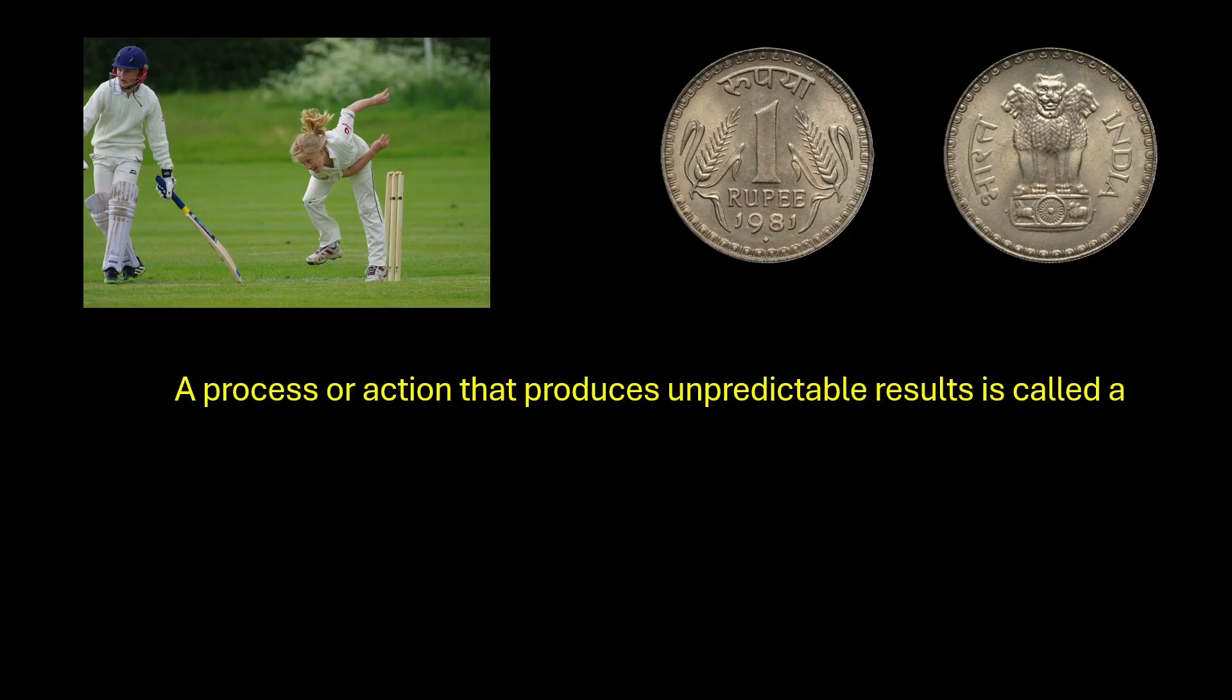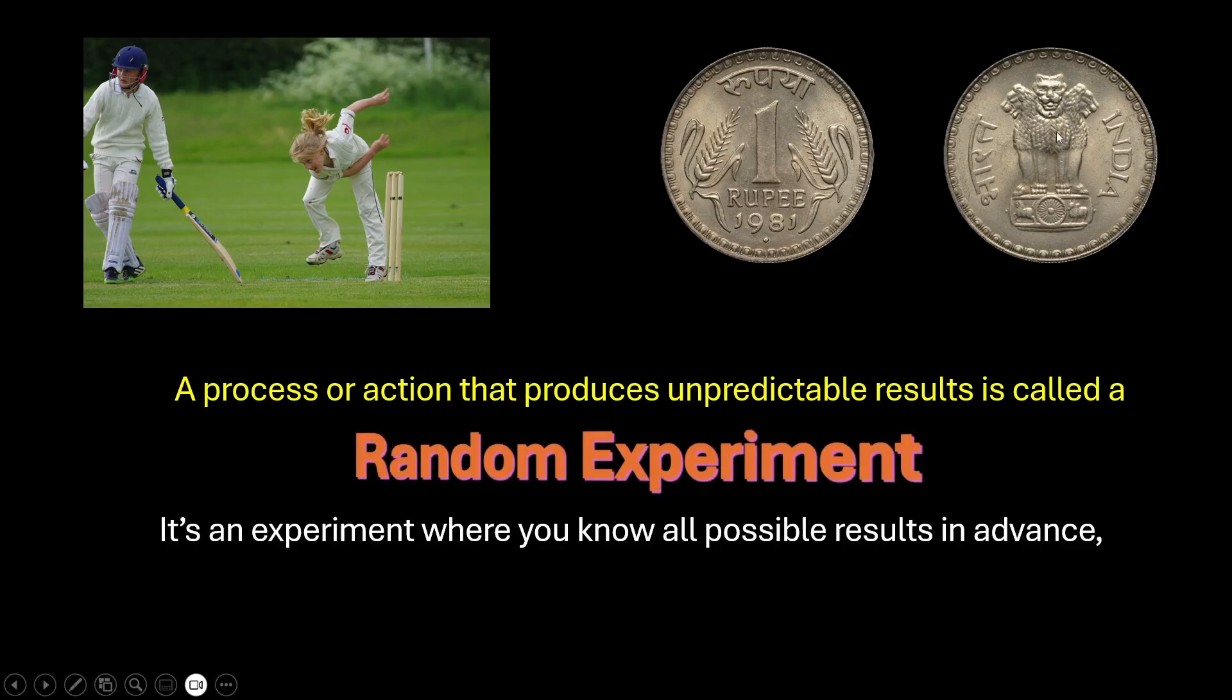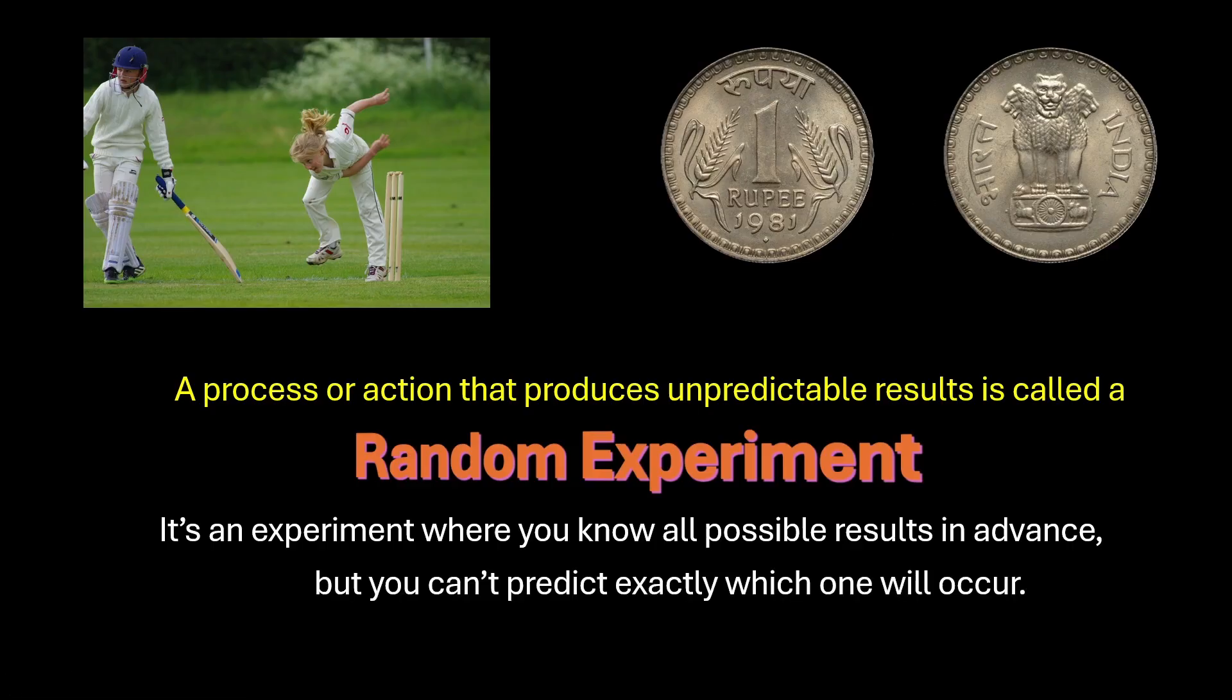A process or action that produces unpredictable results is called a random experiment. It is an experiment where you know all the possible results in advance. For example, here we know that it could be either of these two, heads or tails. We know all the possible results, but we cannot predict which one will occur.